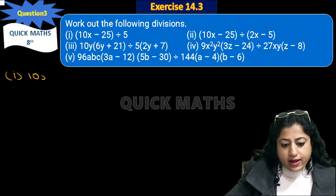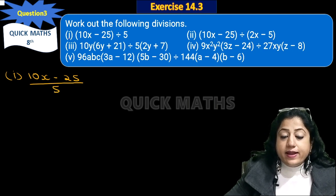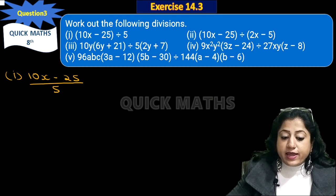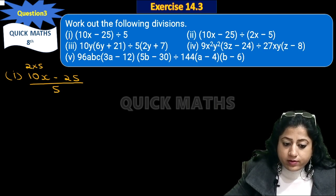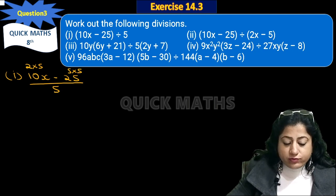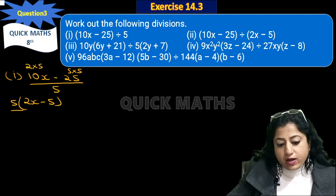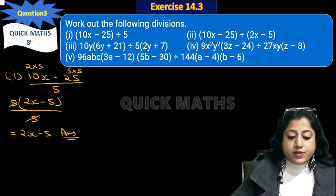The first division is (10x - 25) divided by 5. Here we see that we have to cancel 5. We take 5 as common: 10 is 2 times 5, and 25 is 5 times 5. So 5 is common. We get 5(2x - 5) divided by 5, the 5 cancels, and the answer is 2x - 5.